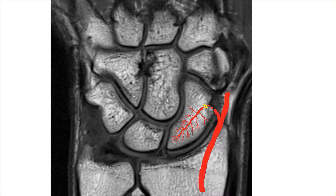The first thing you need to know is how the scaphoid bone is actually vascularized. There is a small branch of the radial artery that enters the scaphoid bone from the dorsal aspect and supplies it in a distal to proximal fashion. There is a second branch that mostly supplies the distal pole, and when you have a fracture, the blood supply is cut off, putting the scaphoid bone at risk for avascular necrosis.